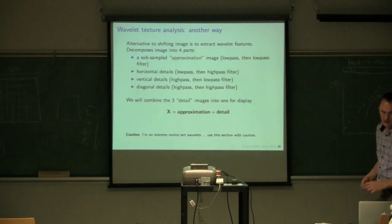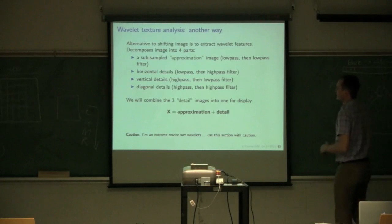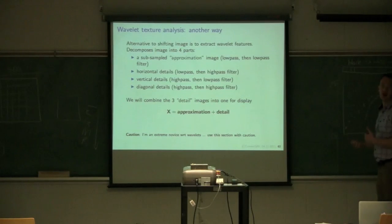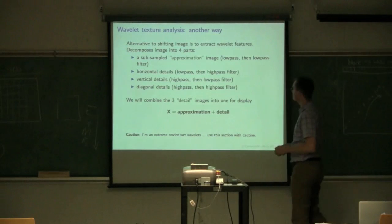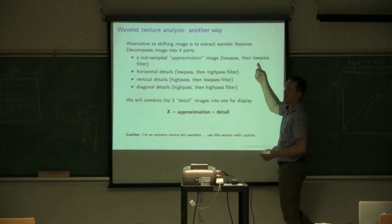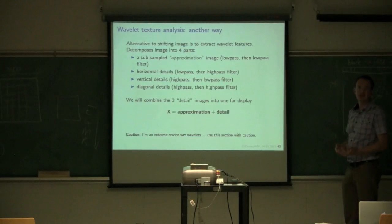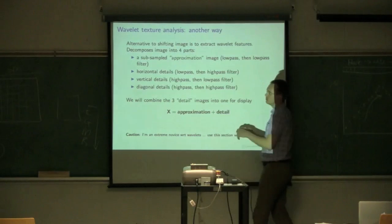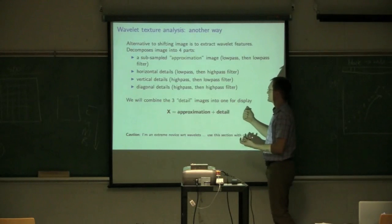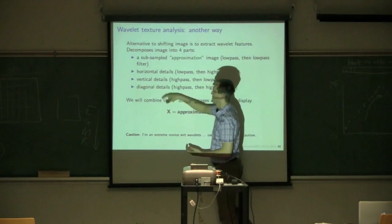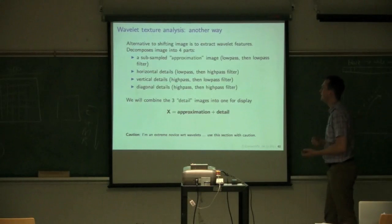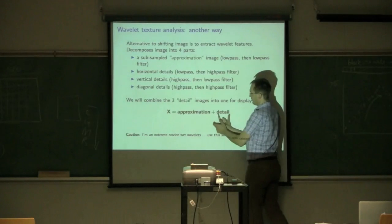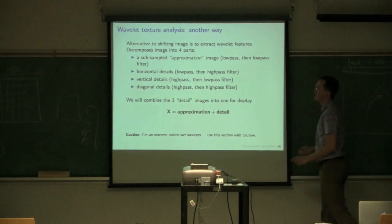So, I'll skip over this. What Jude did was he used a wavelet, what's called wavelet texture analysis. And what this does is it decomposes the original image into four other images. So, the first image that it decomposes is what's called your approximation image. That's in fact a low pass filter followed by another low pass filter. It forms a horizontal detail image. It forms a vertical detail image and a diagonal detail image.